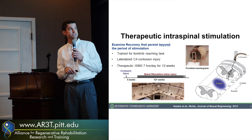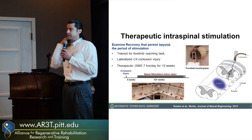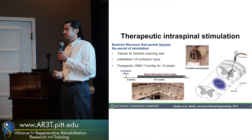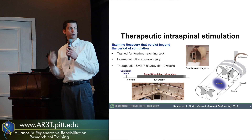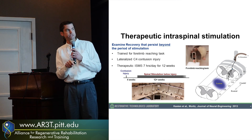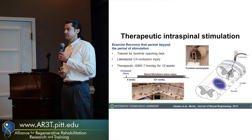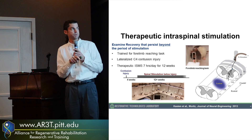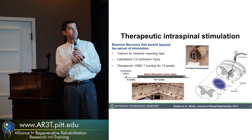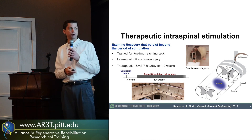We trained animals to perform this task before they received a lateralized C4 contusion injury — an injury of the fourth cervical segment — that dramatically impairs their ability to perform this task as it interrupts the connections between the cortex and the cervical spinal cord. We implanted wires below the injury and delivered therapeutic open-loop stimulation for most of a day, five days a week for about 12 weeks, beginning four weeks after injury to model the semi-chronic spinal cord condition.